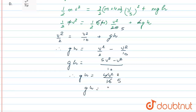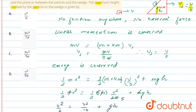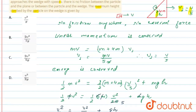So g h is equal to 2v squared by 5, which gives us height h equal to 2v squared by 5g. The height climbed by the body is 2v squared by 5g. Checking the options — option C: 2v squared by 5g. That is the correct answer.